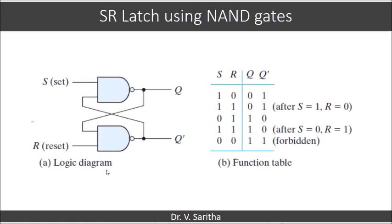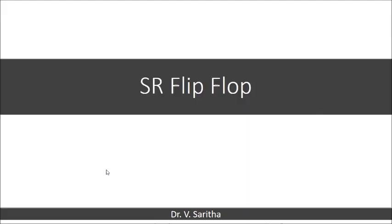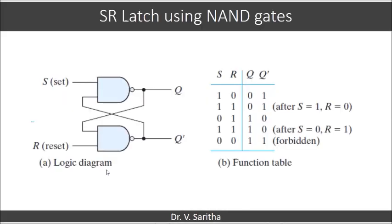Now we will look at the SR latch using NAND gates. Similarly, by substituting the values of S and R as the various combinations — 1,0; 1,1; 0,1; 1,1; and 0,0 — we can observe how the corresponding output values are obtained. Thank you.